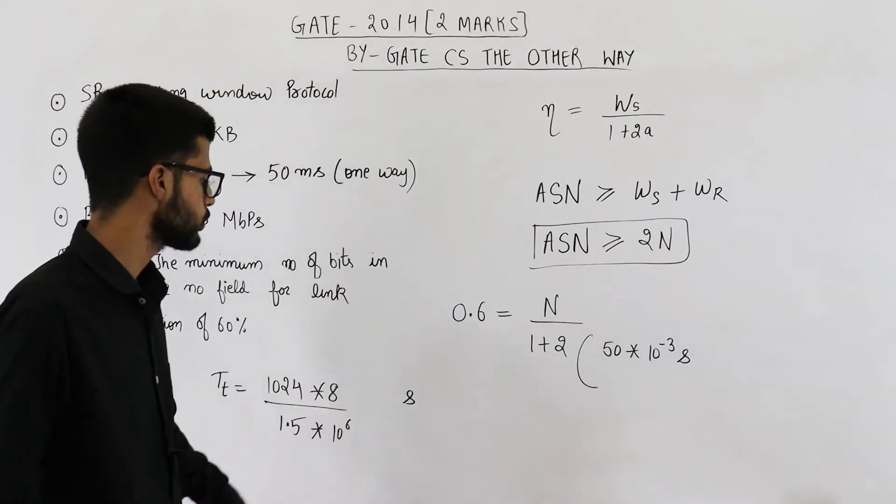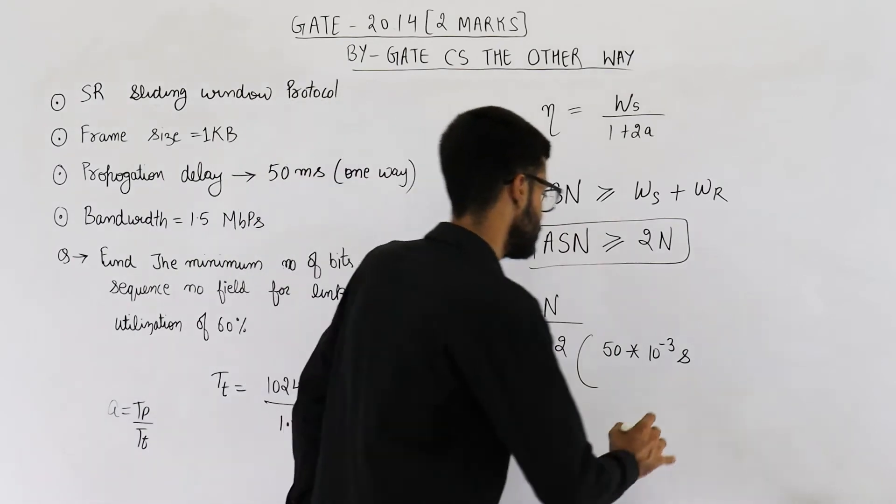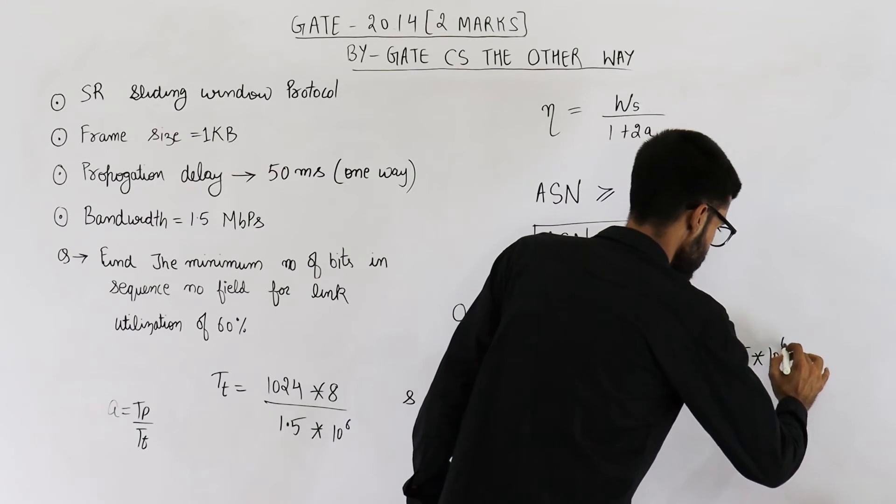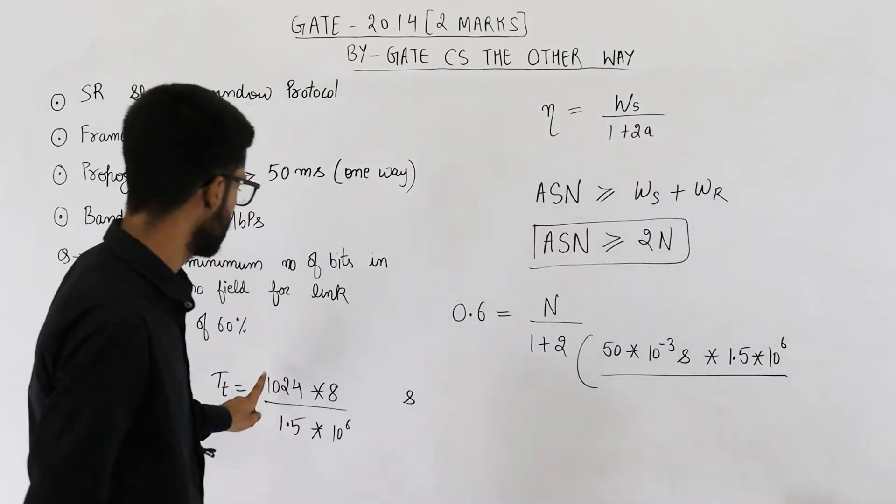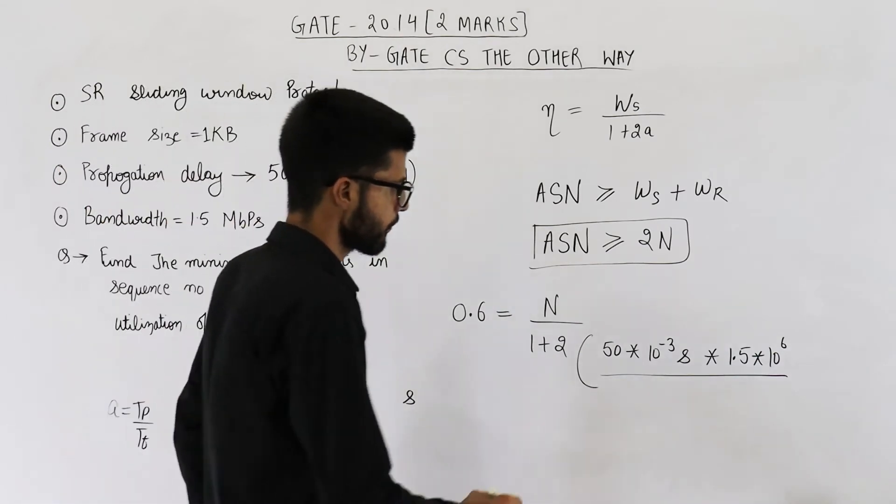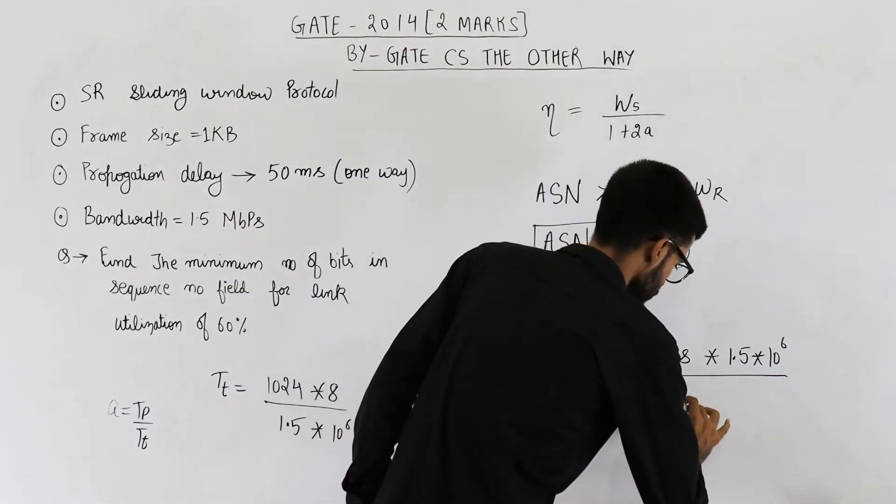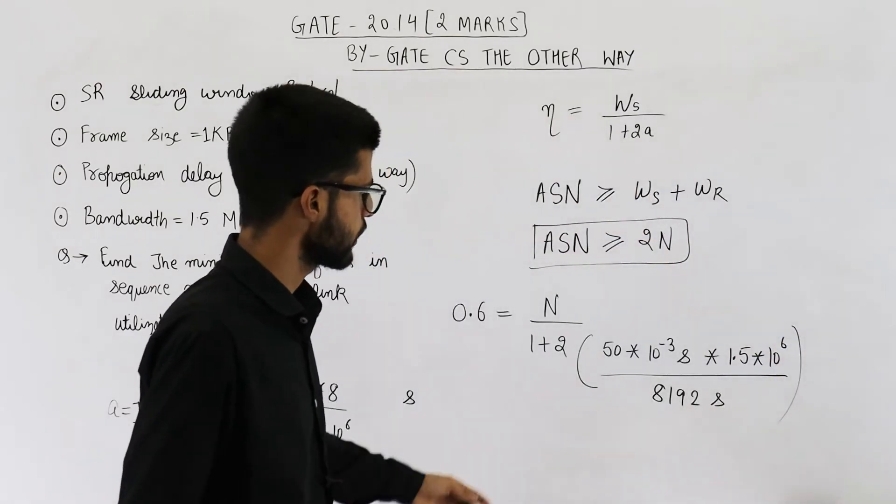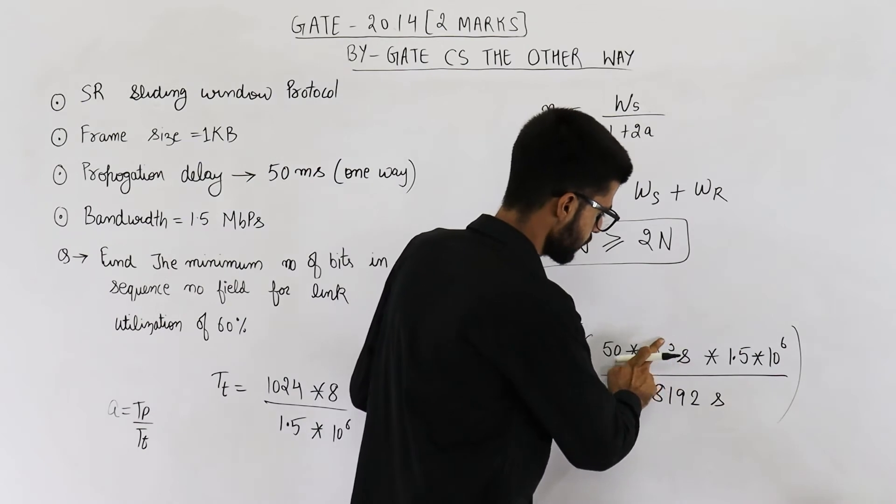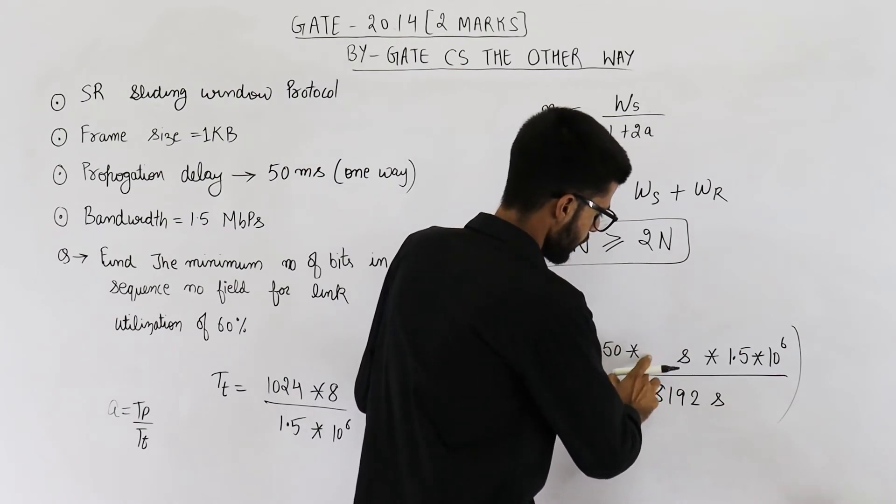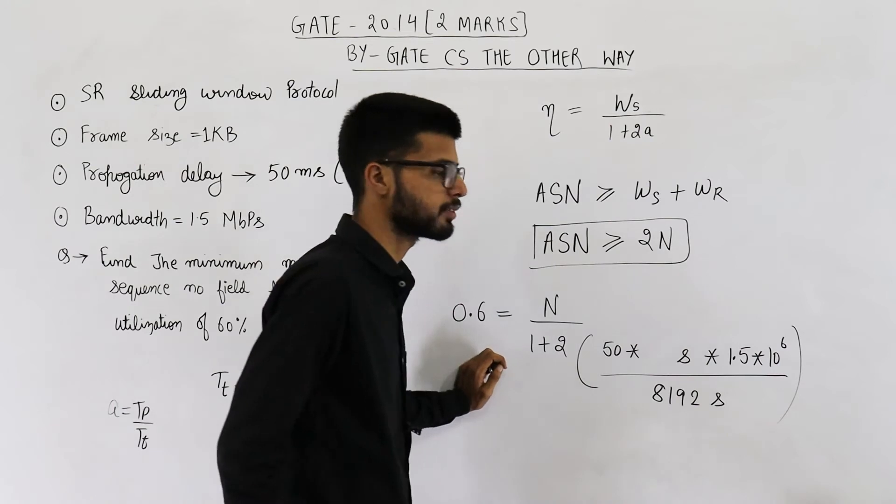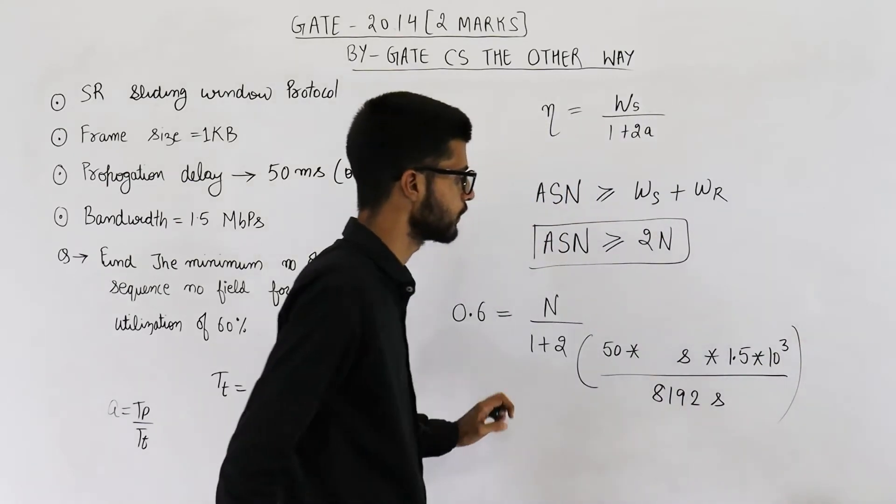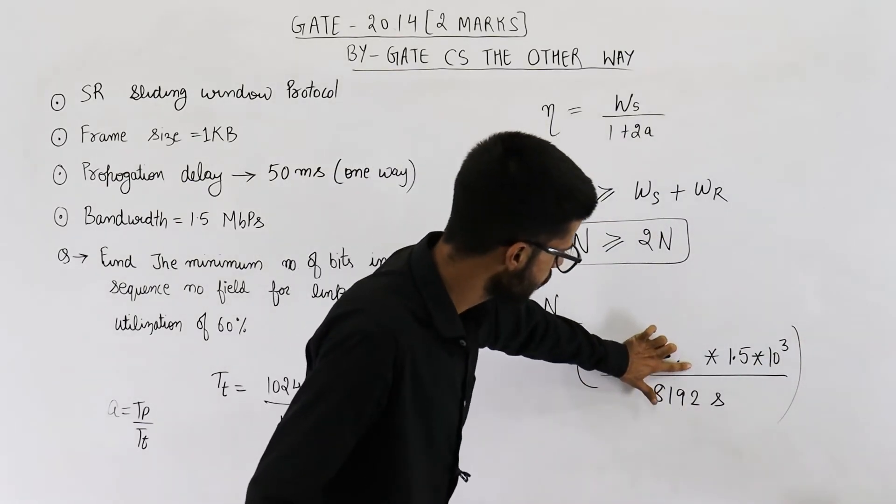It will be 1.5 into 10 raised to the power 6 divided by 1.5 into 10 raised to the power 6 divided by 8192 seconds. So let's just calculate it. So 10 raised to the power minus 3 and 10 raised to the power plus 6 they can be cancelled. And you will get 10 raised to the power plus 3 only. Second and second will also get cancelled.